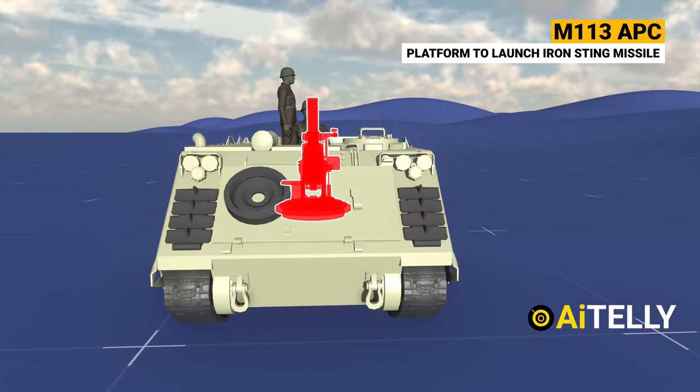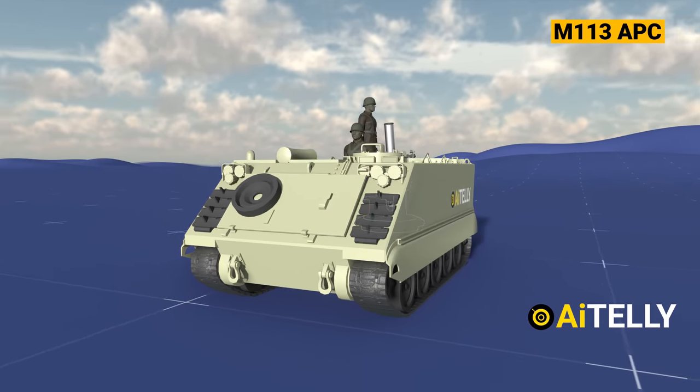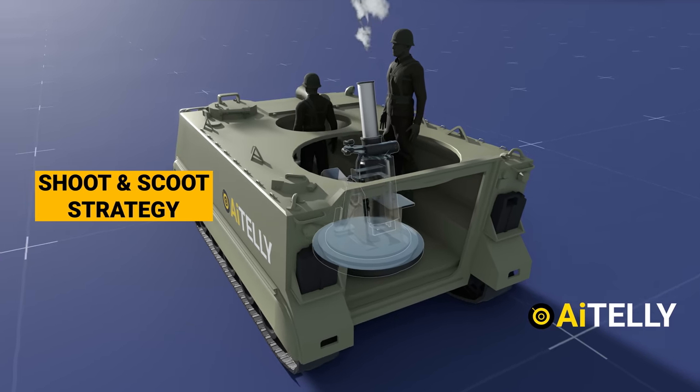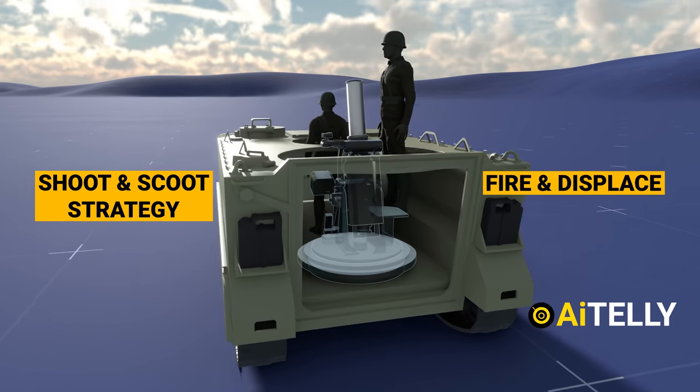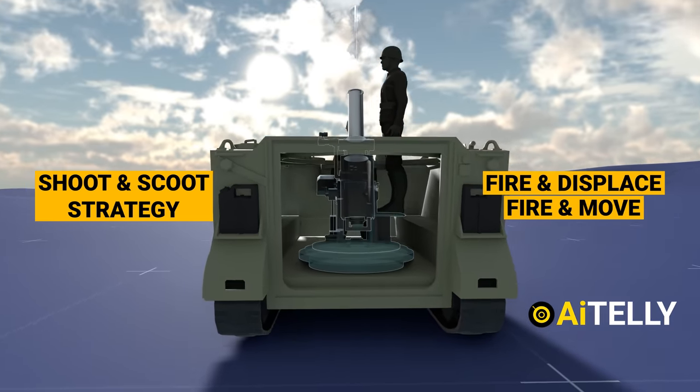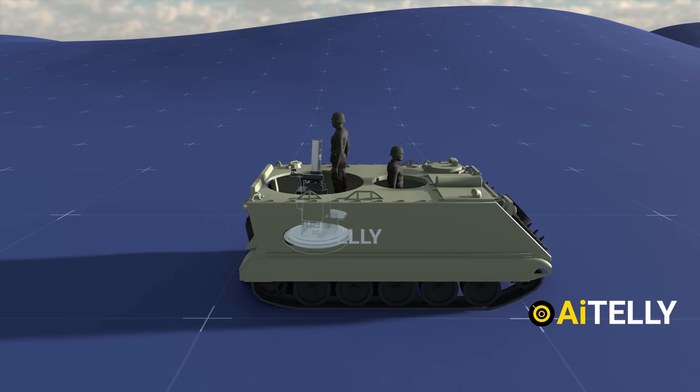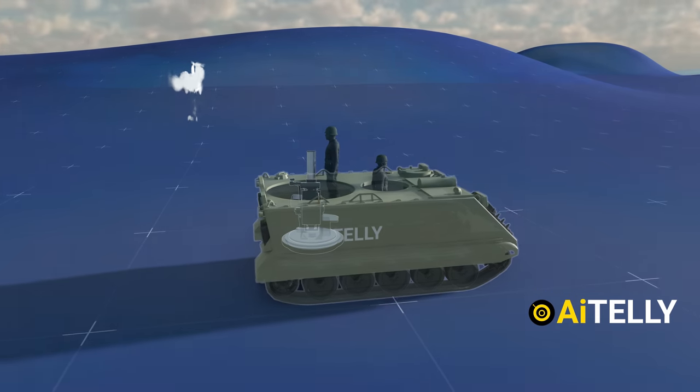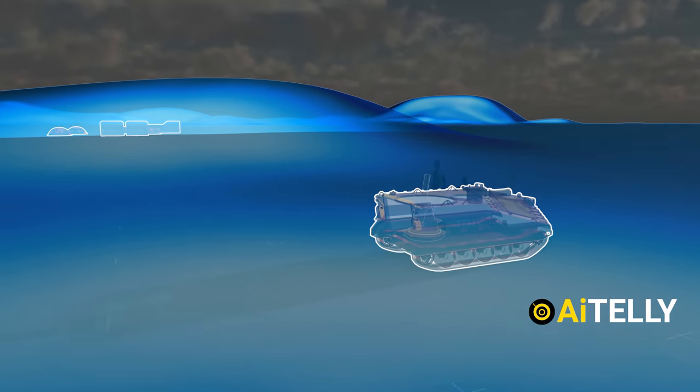This is the platform required to launch the Iron Sting missile. The Army employs a shoot-and-scoot strategy, also known as fire-and-displace or fire-and-move. It is an artillery tactic involving firing at a target and then immediately moving away from the location to avoid counter-battery fire from the enemy.